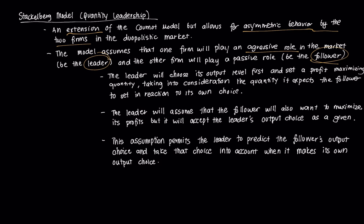The leader firm will choose its output level first and set a profit-maximizing quantity, taking into consideration the quantity it expects the follower to set in reaction to its own choice. So the leader firm is aware of its role and sets its quantity at a profit-maximizing level while accounting for what the follower firm would choose given that decision. The leader also assumes the follower will want to maximize its own profits, but knows the follower will accept the leader's output choice as given.